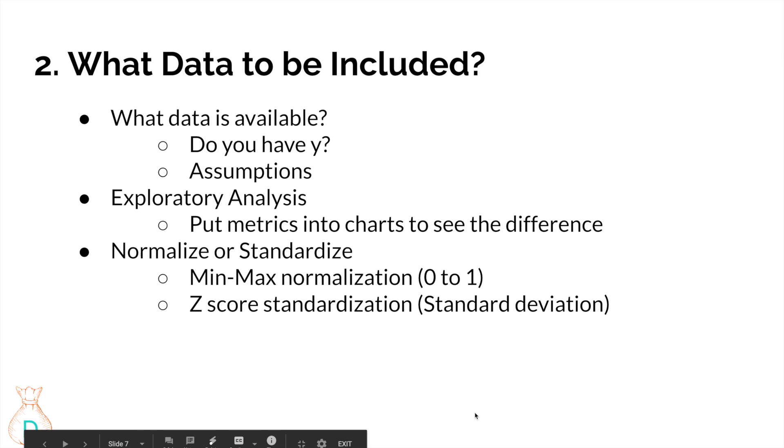And the second question is, what data should we include? And you have to think about in your database, what data is available for you? And do you have a Y? If you have a Y, then that means you're supervised learning because you know exactly what's the expected outcome. And then in your data collection process, you have to have a lot of assumptions about thinking. You have to put yourself into users' shoes, like why would they churn? How are they likely to churn? And you think, oh, if they're very engaged, they're less likely to churn. If they subscribe to something, they're less likely going to churn. You have to come up with all these assumptions yourself.